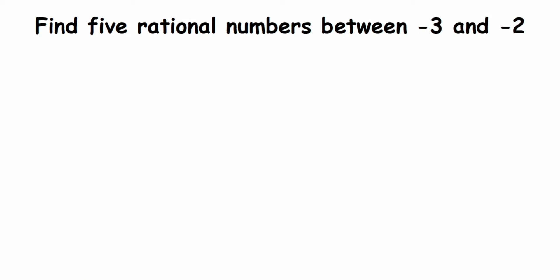You can see that between minus 3 and minus 2 there is no gap, right? So how do we find rational numbers between them? That's really important. What we're going to do here is find equivalent rational numbers of minus 3 and minus 2. Whenever there's no gap between two rational numbers given, we have to find their equivalent rational numbers, and then we can find the answer.